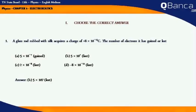Unit 1 Electrostatics. Choose the correct answer. A glass rod rubbed with silk acquires a charge of 8 into 10 to the power minus 12 C. The number of electrons it has gained or lost. Answer: 5 into 10 to the power 7, loss.